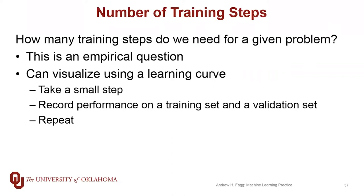The way we're going to get at this is by visualizing our learning curve. Now, this term 'learning curve' — the book uses it to mean something different. The standard use of the term is this: in the gradient descent method, we start out with random parameters, take a small number of steps of gradient descent, record the performance of the model with respect to the training set and an independent validation set, and then repeat that process to watch how performance changes as a function of the number of iterations.